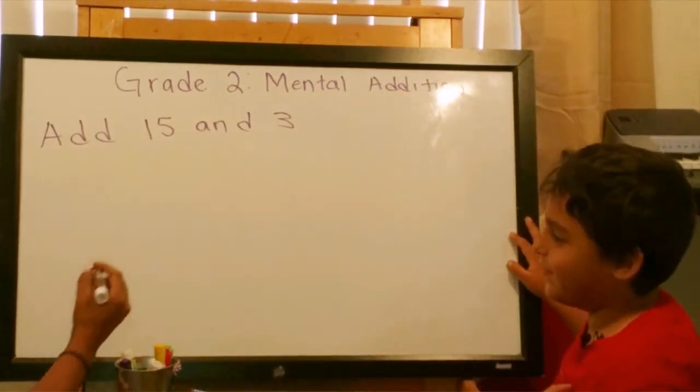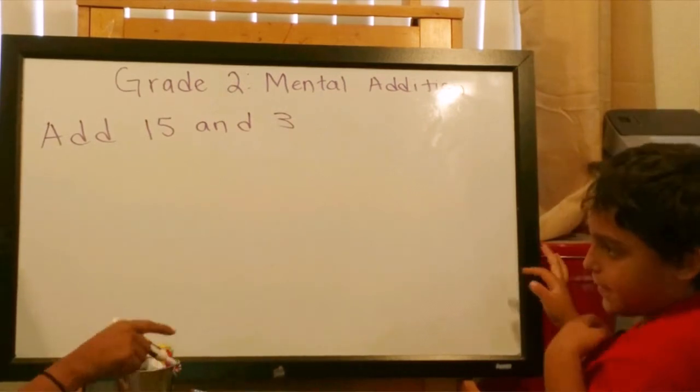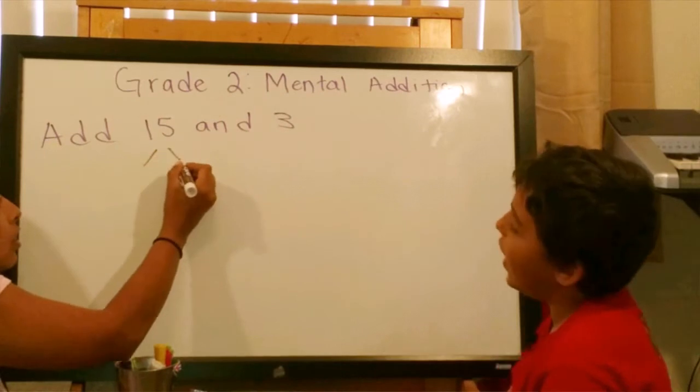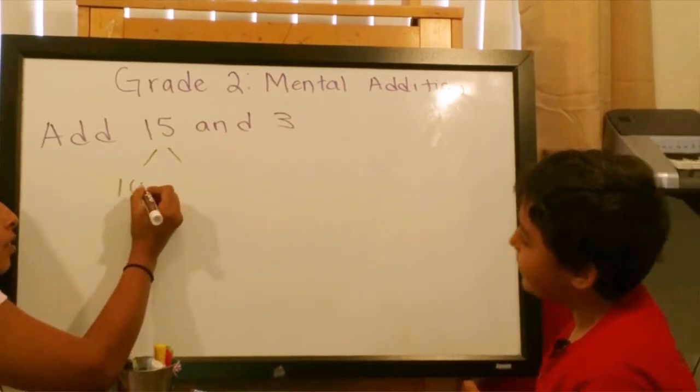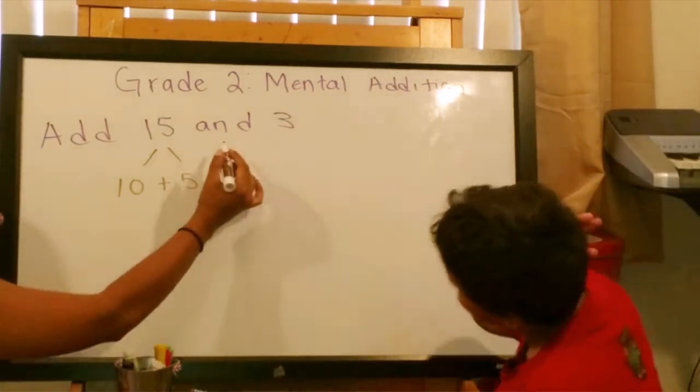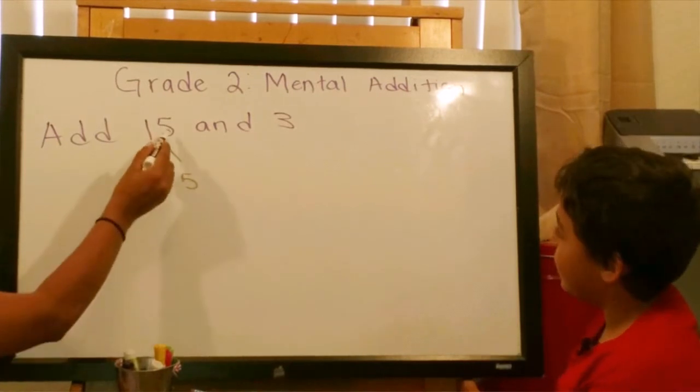I have fifteen and three. So, fifteen is ten and five. Ten is in the tens place and five is in the ones place.